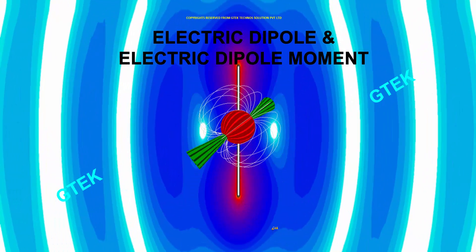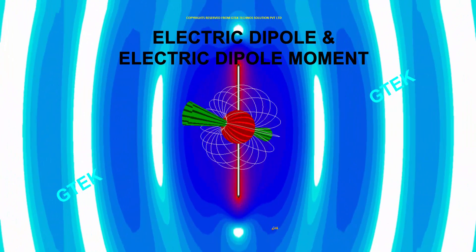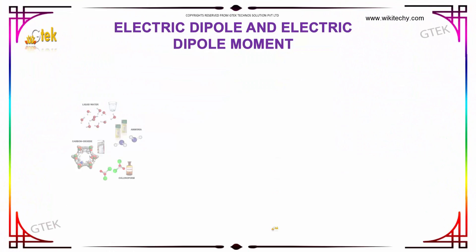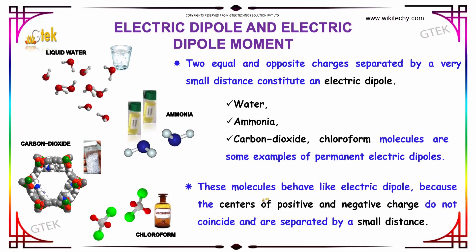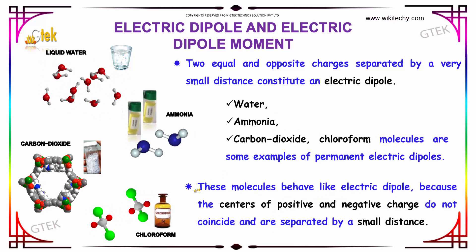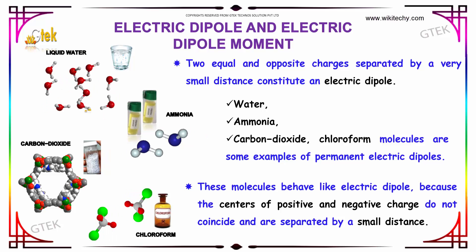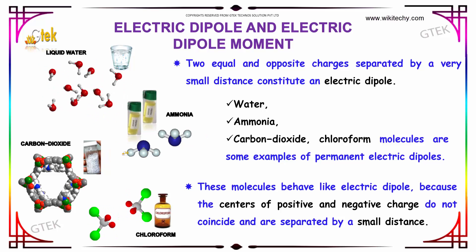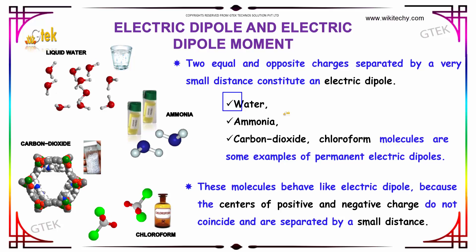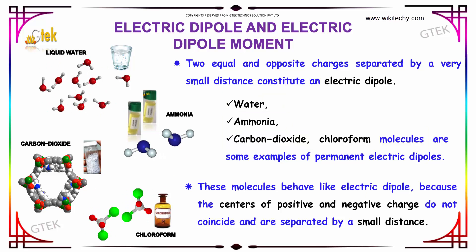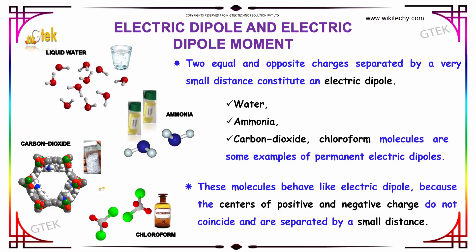Let's discuss the electric dipole and the electric dipole moment. Two equal and opposite charges separated by a very small distance constitute an electric dipole. Examples include water, ammonia, carbon dioxide, and chloroform molecules, which are considered to be permanent electric dipoles.